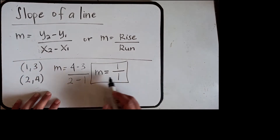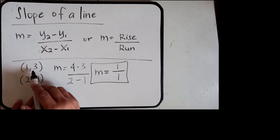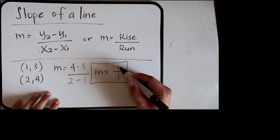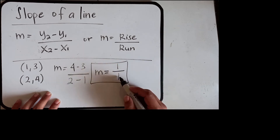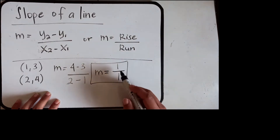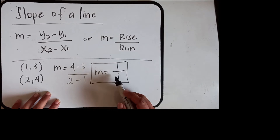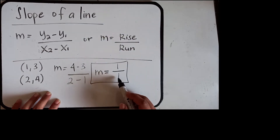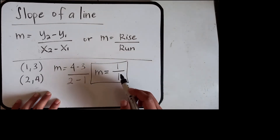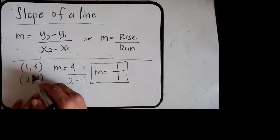This slope describes that as the points travel upward one step, they move one step forward. Because these are all positive numbers, positive 1 means it goes one step upward and one step forward.